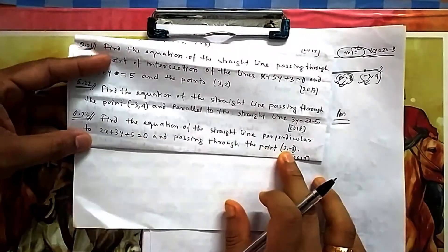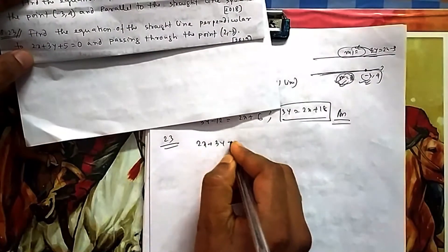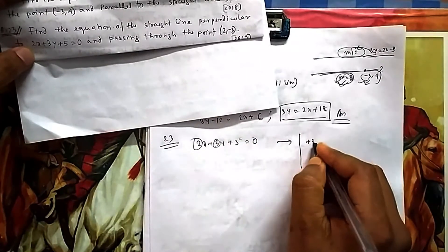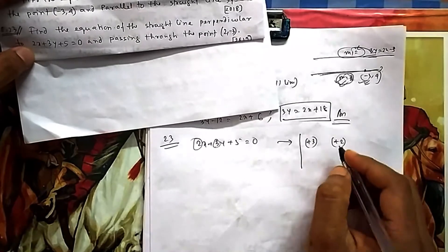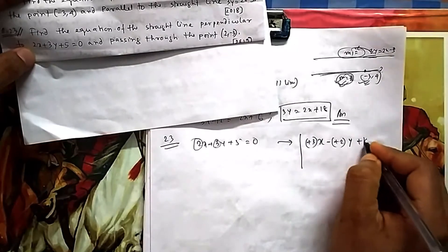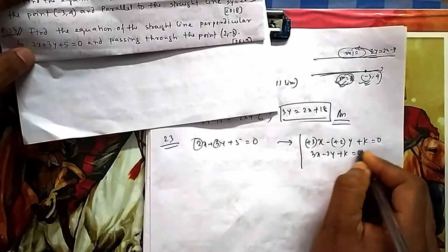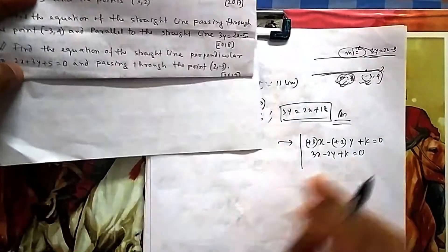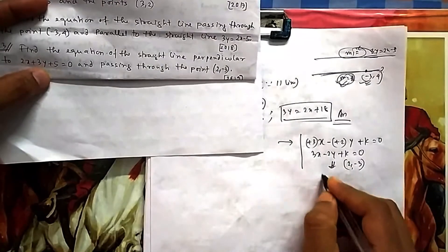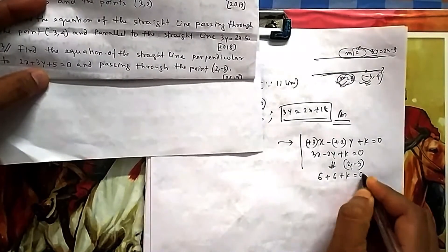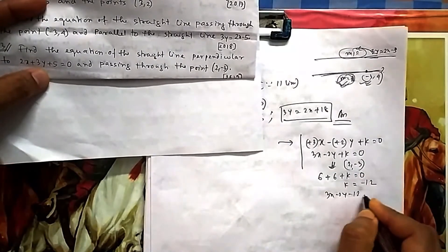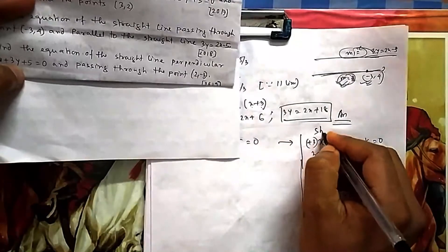Question 23: find the equation of the straight line perpendicular to 2x + 3y + 5 = 0 and passing through (2, −3). Using the shortcut for perpendicular lines: swap the coefficients of x and y, then change one sign. So it becomes 3x − 2y + k = 0. Now put in (2, −3): 6 + 6 + k = 0, giving k = −12. So the equation is 3x − 2y − 12 = 0. Very easy and very fast using this shortcut method.